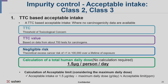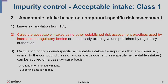Exceeding 10 years of long-term use — for Class 2 or Class 3 — the TTC-based acceptable intake approach will be applied. Where there is sufficient mutagenicity data, which is Class 1, rather than using TTC, a risk assessment is conducted to set acceptable intake. Linear extrapolation is utilized and compound-specific acceptable intake is calculated. Risk assessment practices used by international regulatory bodies can also be applied.